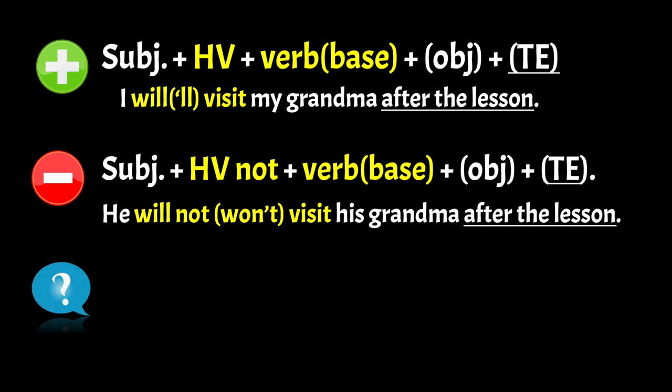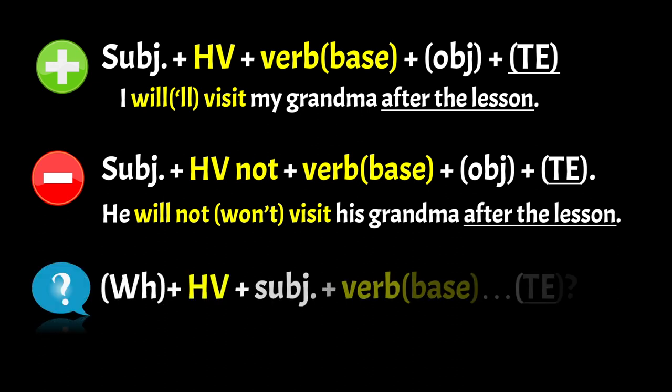And finally to make a question, you need the WH question word — maybe — so that would be how, what, where, how many. Then you need the helping verb, then you need the subject, then the base of the verb, and then anything else.